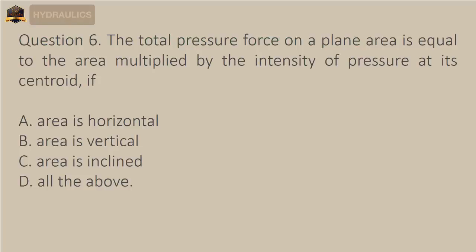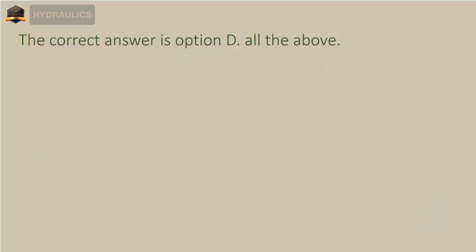Question 6: The total pressure force on a plane area is equal to the area multiplied by the intensity of pressure at its centroid if — A) area is horizontal, B) area is vertical, C) area is inclined, D) all of the above. The correct answer is option D: all of the above.